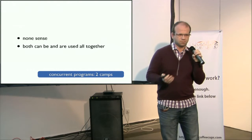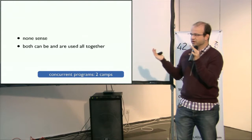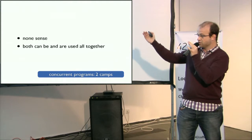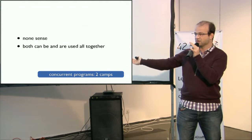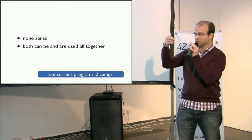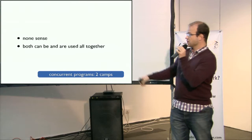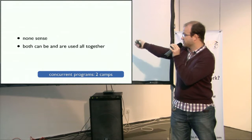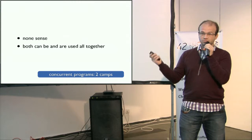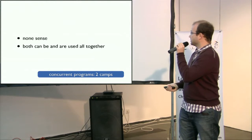Speaking about having two camps — threads and event loops — is really nonsense, because beyond an event loop you have threads; you are using threads behind LibUV. The Node.js guys are pretty cool, but saying that they don't use any threads is pretty wrong. They are using threads — a lot of threads — behind the event loop. We can use both together if you want; a lot of people do that.